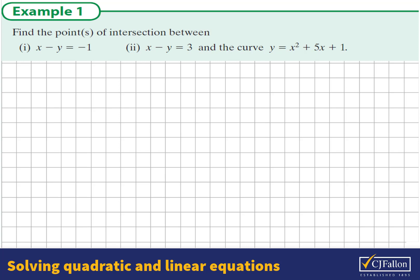We have a linear equation x minus y equals negative 1, and the curve y equals x squared plus 5x plus 1. We're going to firstly rewrite the linear equation as y equals. So I'm going to take x from both sides of the equation, giving negative y equals negative x minus 1, and then changing all the signs by multiplying by negative 1, we get y equals x plus 1.